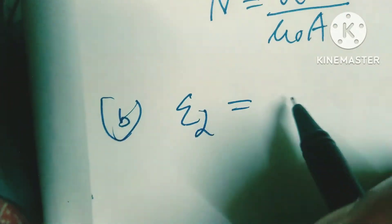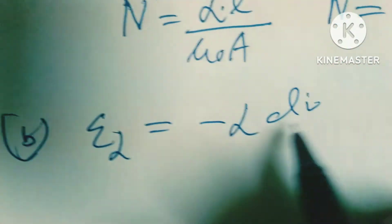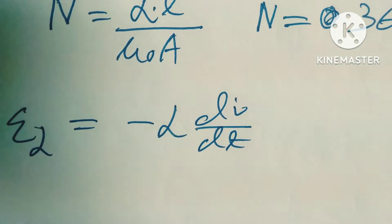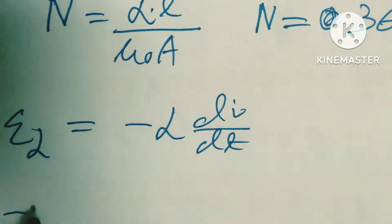Part (b): εL = -L(di/dt), and εL is equal to -12.5 millivolts.